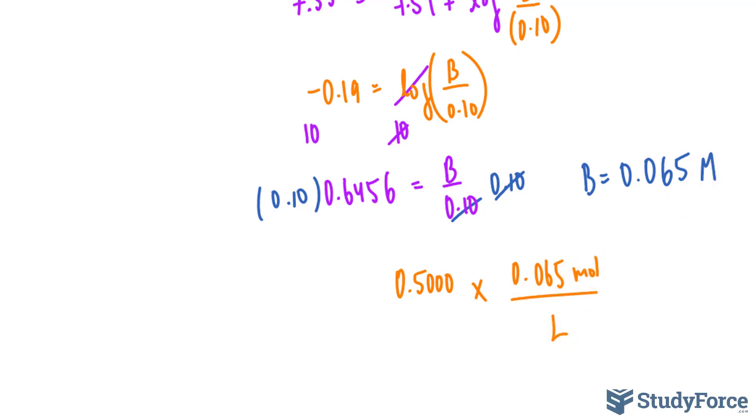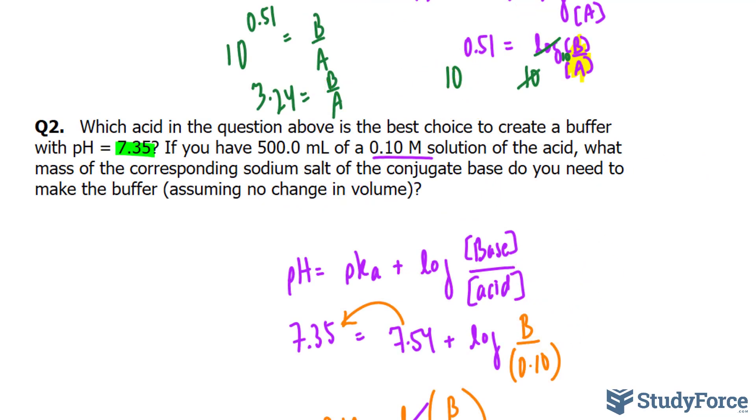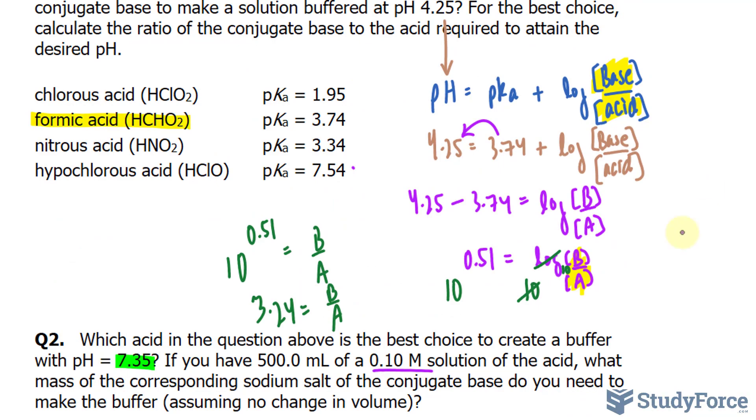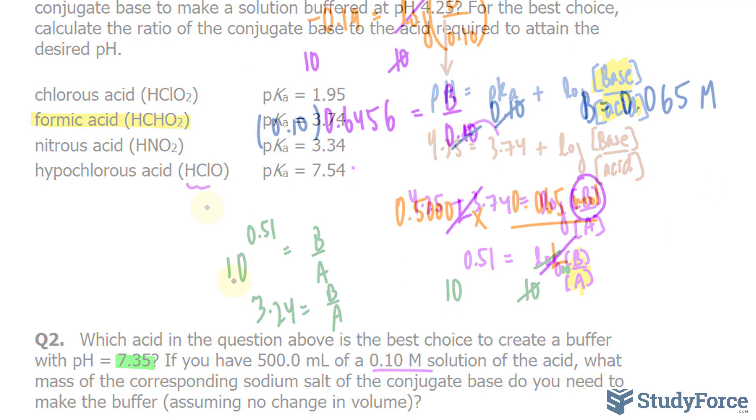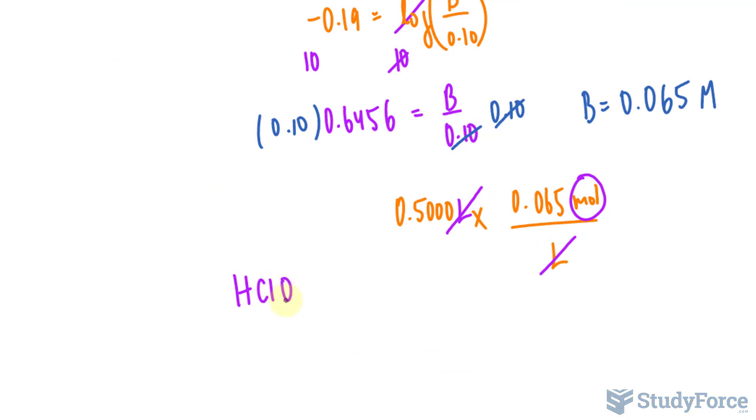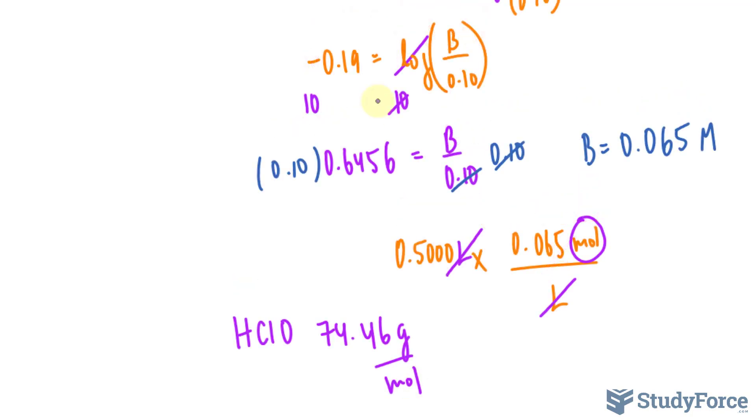Remember, that's the same thing as molarity. This liter unit and this liter unit cancel out, leaving us with the amount of moles. The acid that we used was hypochlorous acid. We need to find its molar mass, HClO. Its molar mass is 74.46 grams per mole, and you can verify that by using a periodic table. I'll take the product of these two numbers, remember right now it's mole, and multiply it by 74.46 grams per mole.